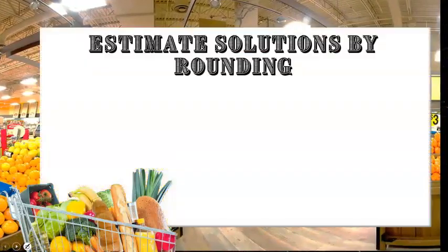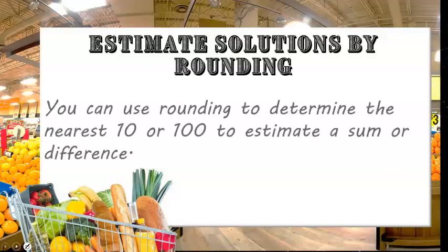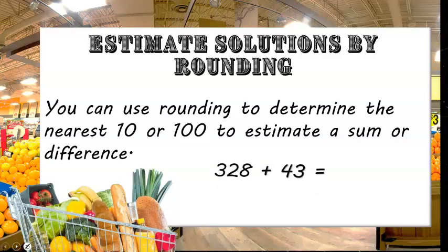One way to estimate solutions is to use rounding. You can use rounding to determine the nearest 10 or 100 to estimate a sum or difference. For example, take 328 plus 43.